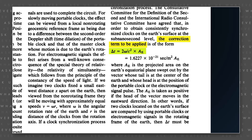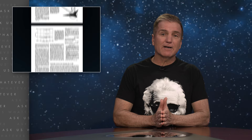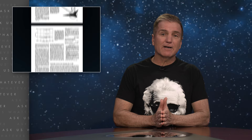In their 1985 Science paper, they use a version of the clock offset term that we discussed in our prior episode, which takes into account the angular rate of Earth's daily rotation and the distance between the axis of rotation and the location of the clock on the Earth's surface. The excellent agreement between this calculation and the Common View GPS synchronization method validates that Earth-based UTC and GPS atomic clocks are coordinated with absolute synchronization relative to the Earth, and that Einstein synchronized clocks differ by an offset amount that can be removed by readjusting their time by the value of the clock offset term.